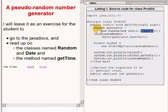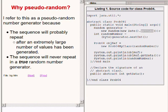I normally refer to this as a pseudo random number generator. The reason is because the sequence of numbers that it will produce will probably repeat after an extremely large number of values has been generated. If it were a true random number generator, that sequence of values would never repeat.